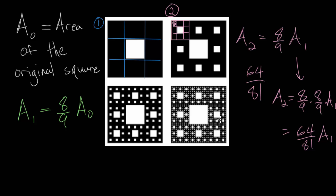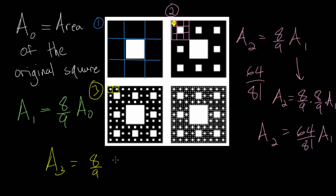So there are a couple of different ways to think about it, but the main idea is that from one step to the next, the area is eight ninths of the previous area. Looking at step three, we repeat the process: each small square is split into nine smaller squares with the middle one taken out, and the remaining area will be eight ninths of what it was in step two — so a sub three is eight ninths of a sub two. Combined, a sub two is really eight ninths squared, and we can see the pattern.